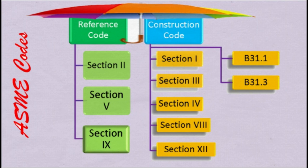Similarly, on the reference codes side, Section 2 covers materials — both non-ferrous and ferrous — and welding consumables. Section 5 covers non-destructive examination methods. And Section 9 — we will learn in this training the scope and uses of ASME Section 9.